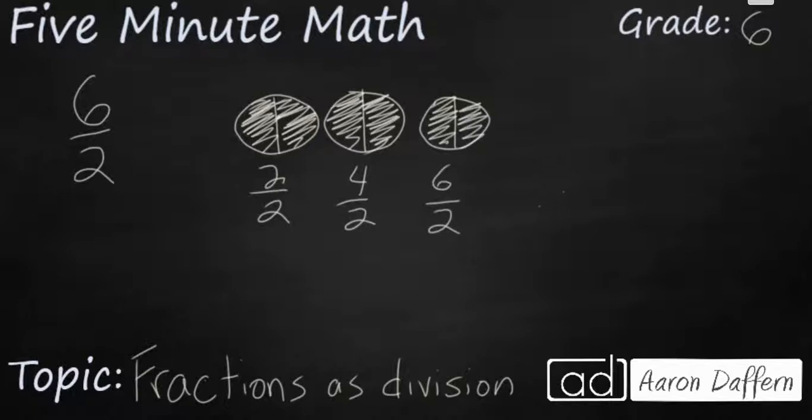The question is, how many wholes do I have? Well, I've got 1, 2, 3. So 6 halves is the same as 3 wholes. That's something we know.